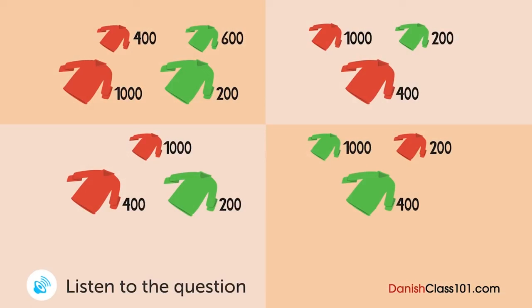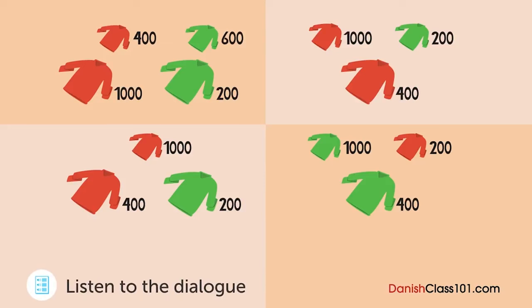En kvinde og en leverandør taler over telefonen. Hvad kommer kvinden til at modtage først? Jeg har brug for dig til at lave og levere nogle trøjer i tid til udsalget i næste måned. Vi har brug for 1000 enheder af røde trøjer i small og 400 enheder i medium, samt 600 enheder af grønne trøjer i small og 200 i medium ved udgangen af denne måned. Vi er ved at løbe tør for grønkaren og er nødt til at få det fra en anden leverandør - vi laver de røde trøjer først. Nej, vi er nødt til at levere de røde og grønne trøjer sammen. Lav så mange grønne som muligt. Vi kan lave 200 enheder af grønne trøjer - hvilken størrelse først? Vi har brug for de små først. Vi leverer de grønne trøjer vi kan sammen med alle de røde.